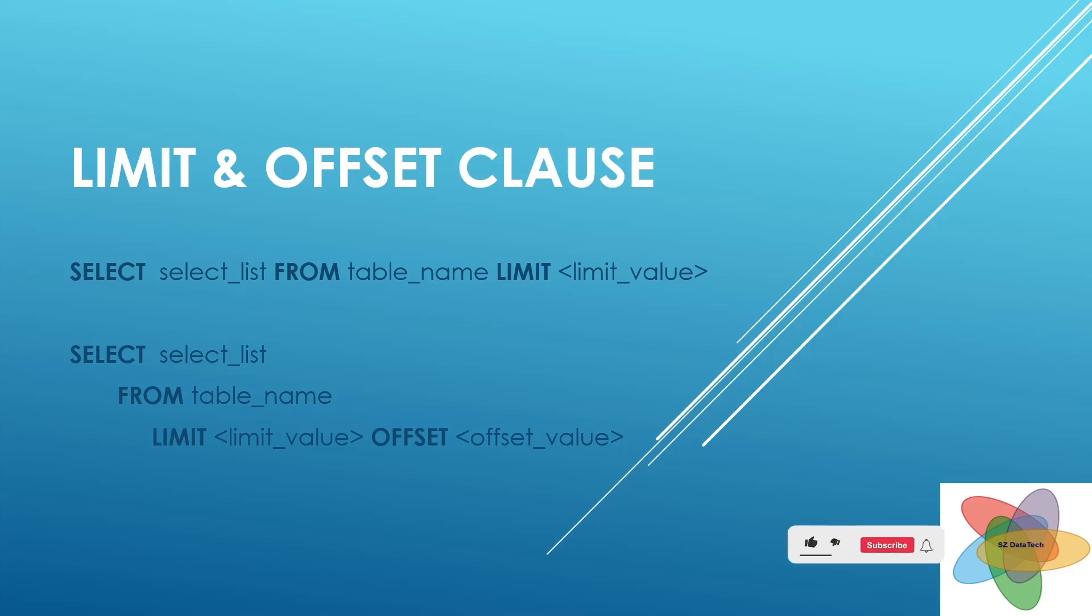Let's break down this particular SQL query. First, let's discuss this query: SELECT select_list FROM table_name LIMIT limit_value. If we have records like one, two, three, four, five, six, seven, eight, nine, ten - we have 10 records in the table. If we apply LIMIT 5 in this SQL query, then in the result set we will get these five records.